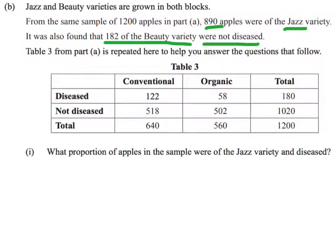So they've given us the previous table that might be helpful. We're asked what proportion of apples were of the Jazz variety and diseased. Looking at the table we've got, we only have information about whether they are diseased or not, and whether they're grown conventionally or organically. That conventional or organic is not actually helpful for this question. So the first thing we need to do is create ourselves a table.